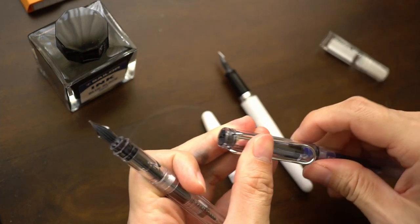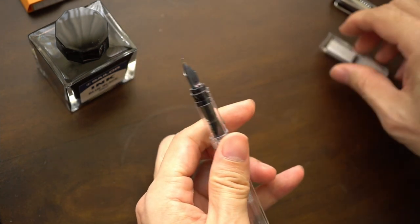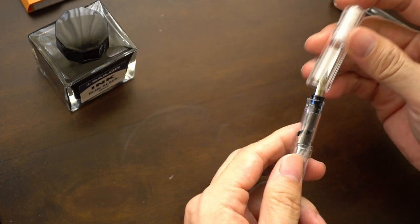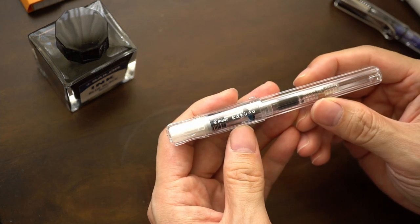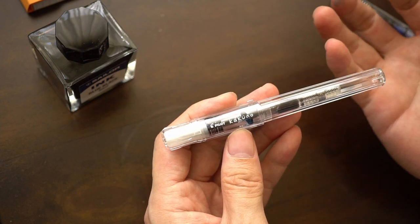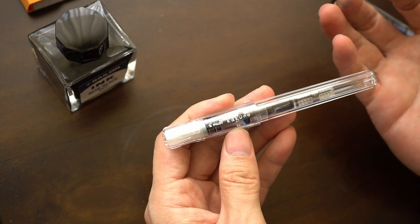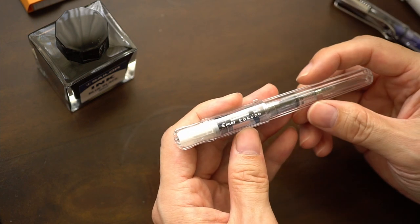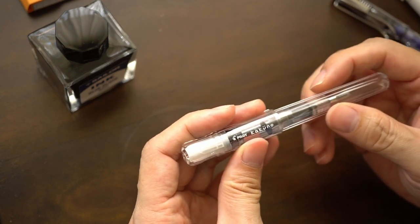Another pen which the Kakuno gets compared to quite a lot is actually the Kaweco Perkeo. That pen costs a little bit more than the Kakuno. Kakuno costs about like I mentioned earlier on it's about the $12 US mark depending where you buy it the Perkeo probably it's three or four dollars more however the design of that pen and this pen is also fairly similar.